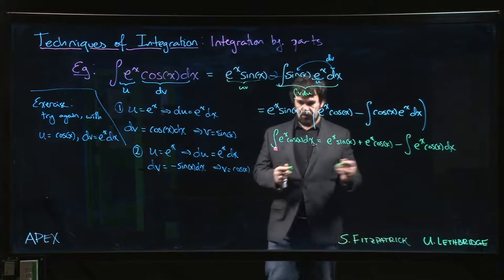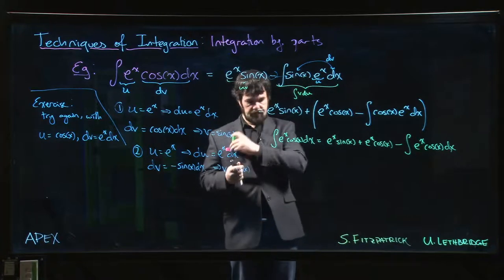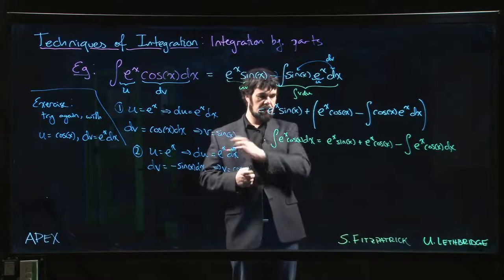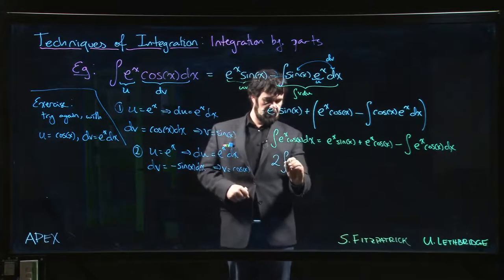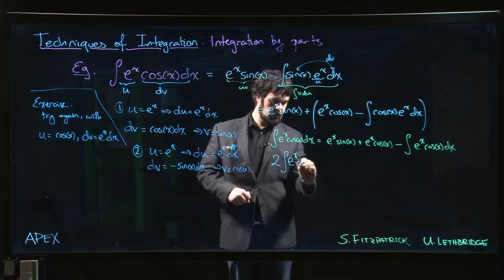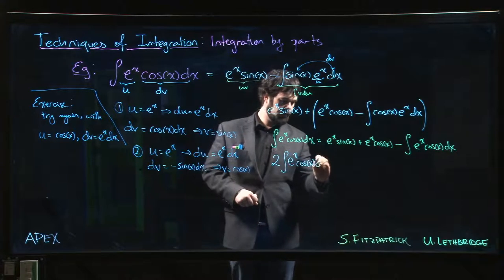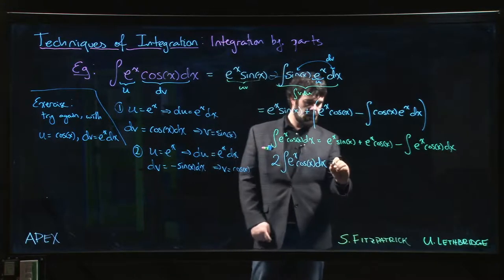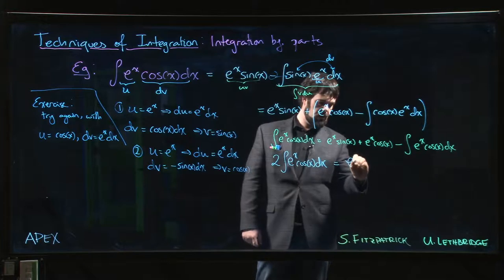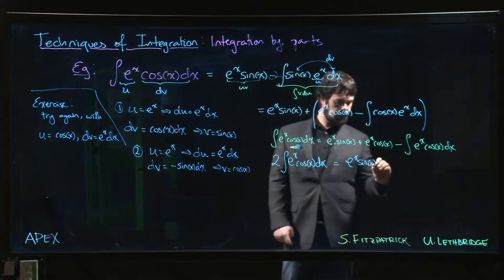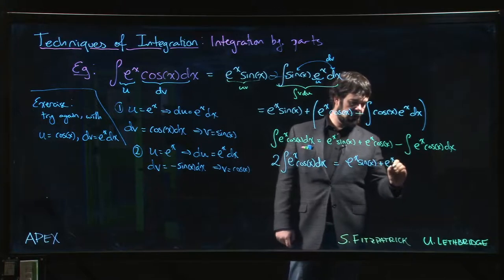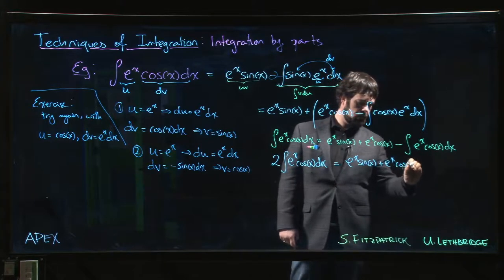So we gather terms, right? That means that two times the integral of e to the x cos x dx is equal to e to the x sin x plus e to the x cos x.